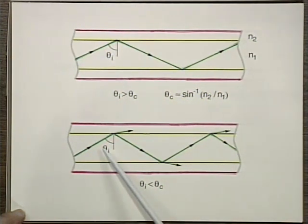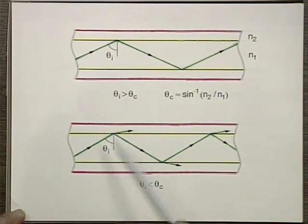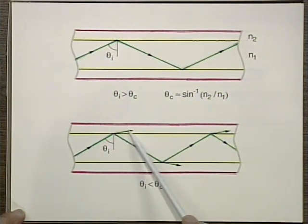If the angle of incidence is smaller than theta critical, then there will be some transmission of light and not all the light will be reflected.